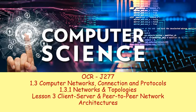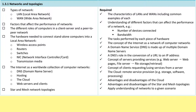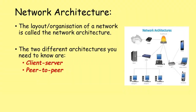Hello and welcome to lesson three in this series. Today we're going to be looking at client-server and peer-to-peer network architectures. We've already gone through types of network and factors that affect network performance, so we're on to client-server and peer-to-peer networks now. The organization of a network is called the network architecture, and at this level there are two architectures you need to know about: client-server and peer-to-peer.